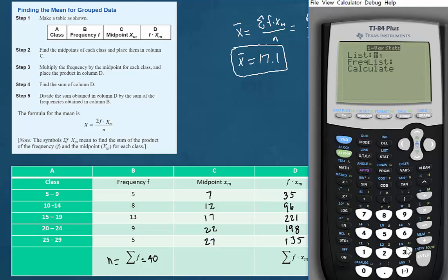So we'll hit second list 3, enter a couple of times, and we find that that sum is 685, just as we found when we added manually.